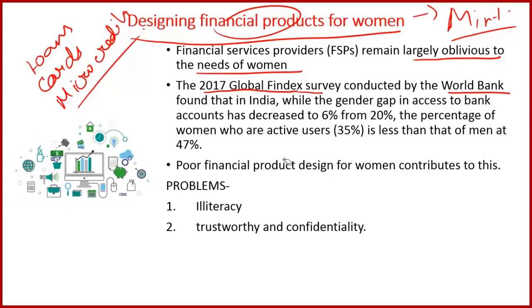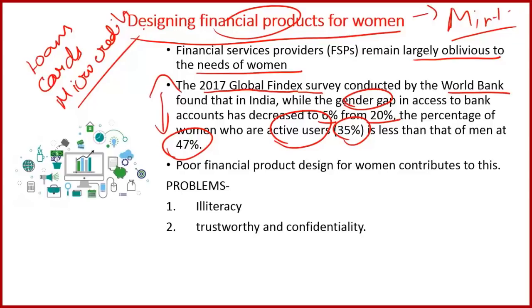According to the 2017 Global Findex Survey conducted by the World Bank, the gender gap in bank access in India decreased from 6 percent to 20 percent. However, the percentage of women who are active users of bank accounts is only 35 percent, much less than the 47 percent for men, showing significant gender inequality in the use of financial products.